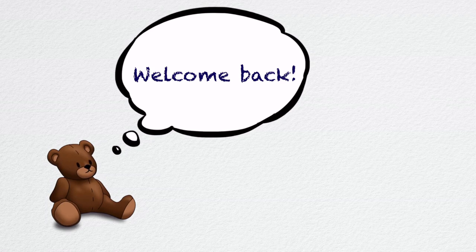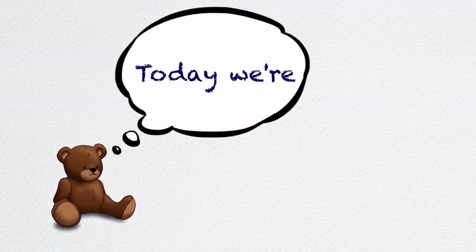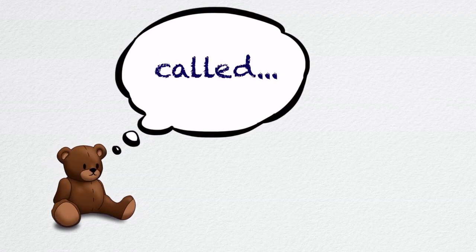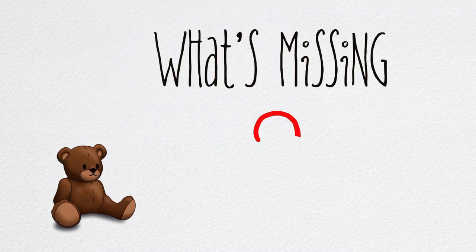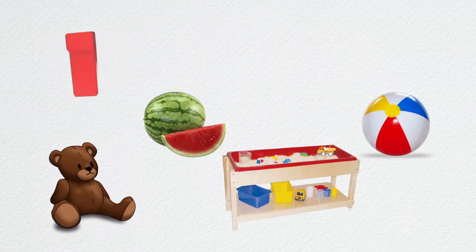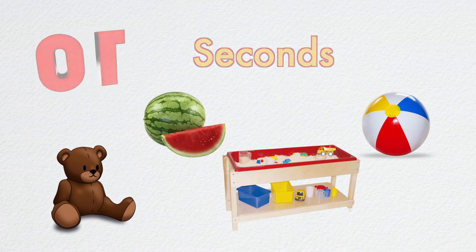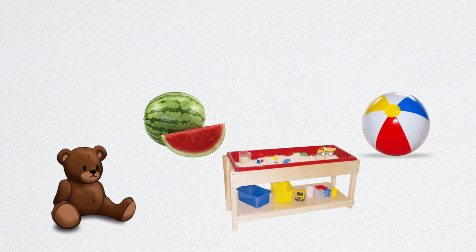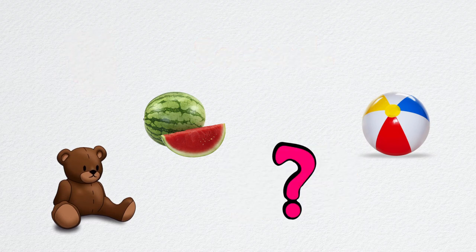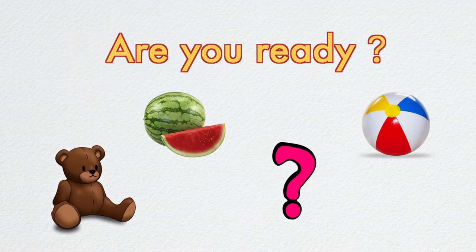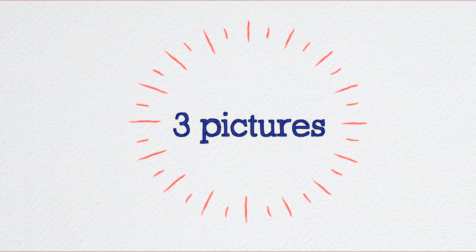Hi boys and girls, welcome back! Today we're going to play a game called What's Missing. The rules are simple: I'm going to show you a set of pictures and you'll have 10 seconds to try and remember them. Then one picture will disappear and you'll have to guess which one it is. Are you ready? We'll start with three pictures.